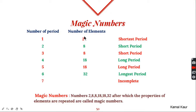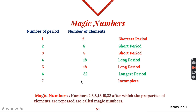Period 1 has 2 elements and is called the shortest period. Periods 2 and 3, with 8 elements each, are called short periods. Periods 4 and 5, with 18 elements each, are called long periods. Period 6, with 32 elements, is called the longest period. Period 7 has slightly fewer than 32 elements and is called the incomplete period.